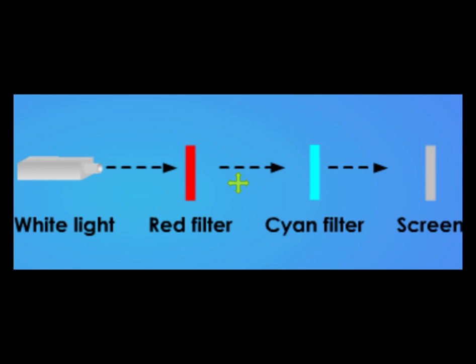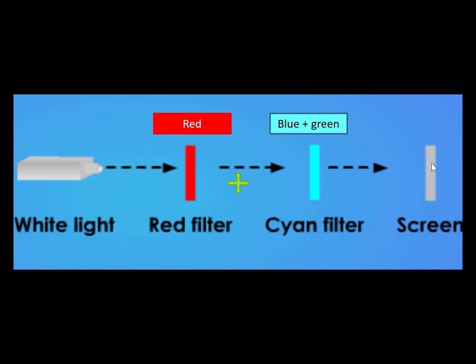Next, let's answer a few questions. What can you see on the screen? The red filter only allows red light to pass through. The cyan filter allows blue, green, and cyan lights to pass through. Therefore, no light can be seen on the screen.